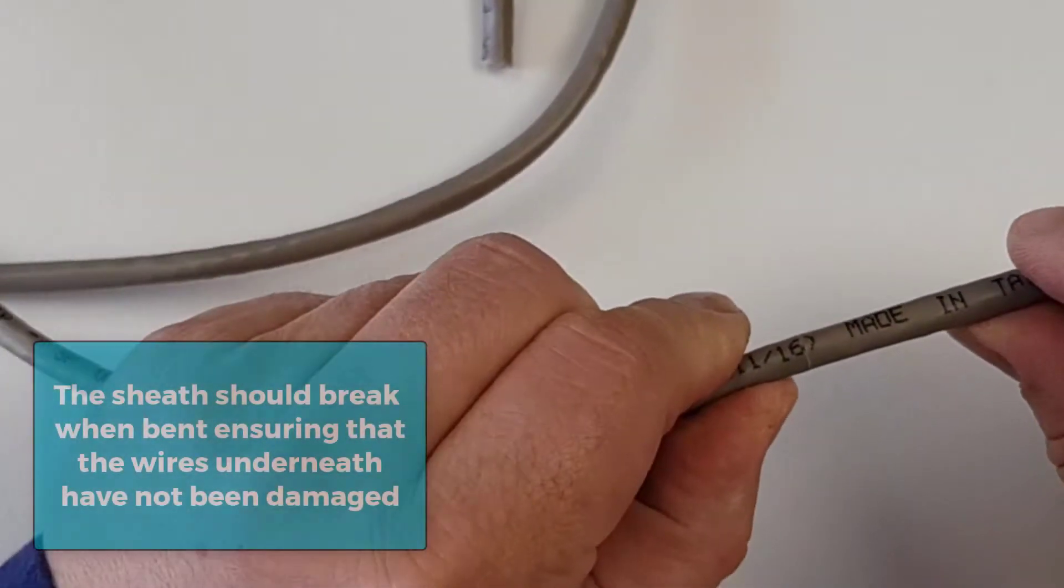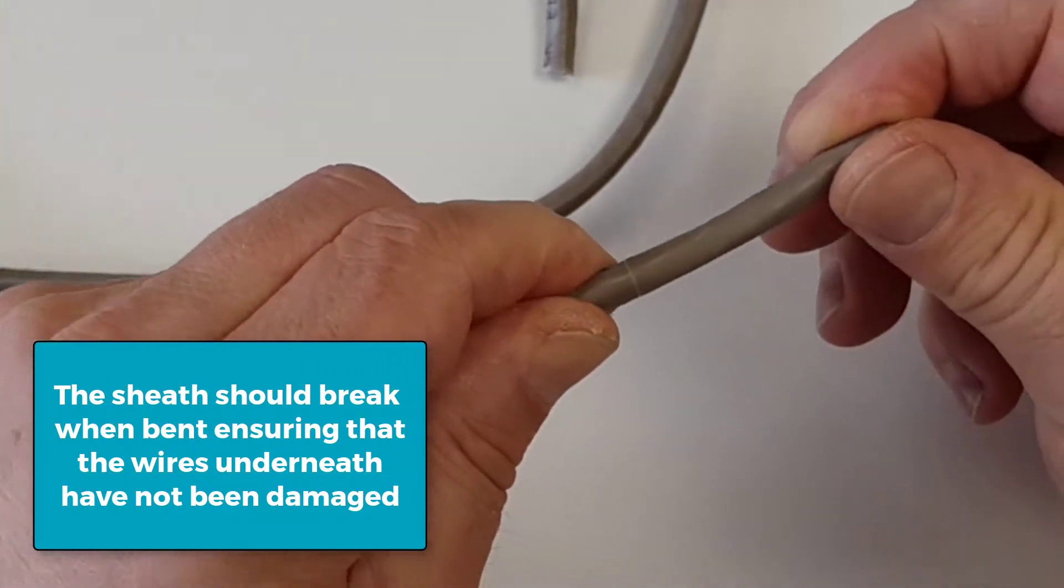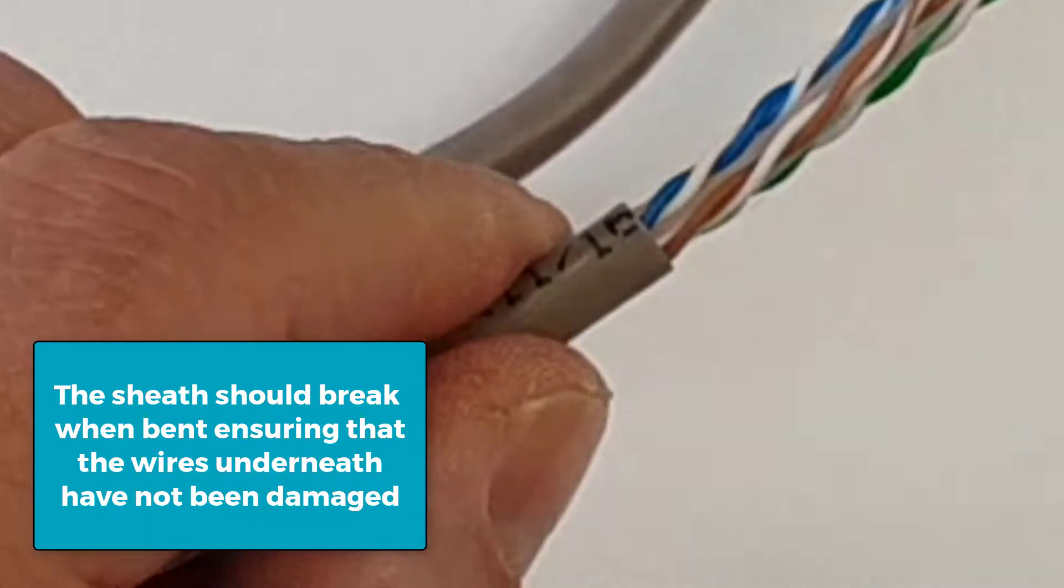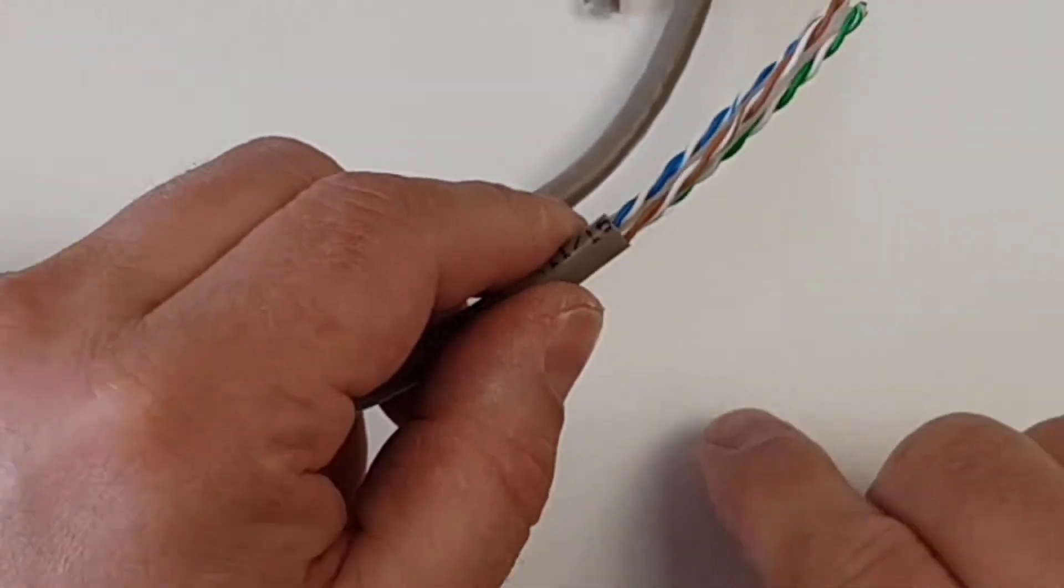By doing that, I am just scoring the sheath and that should just break away. That means that we won't have actually cut through and damaged the wires underneath.